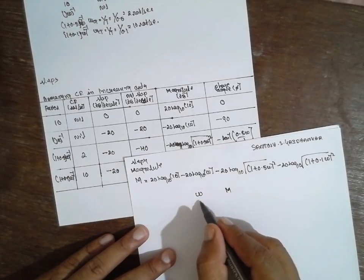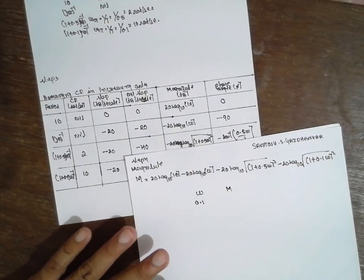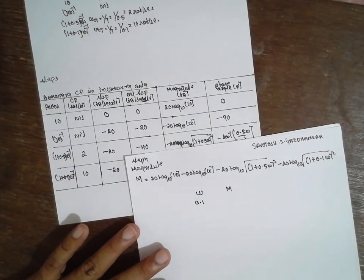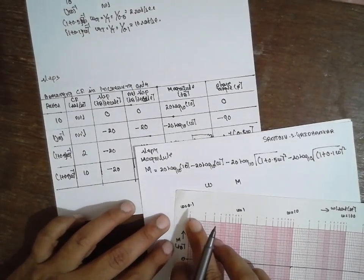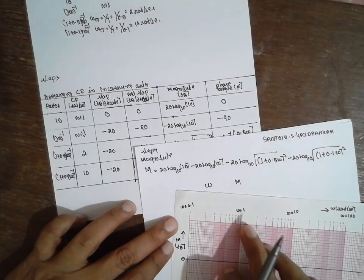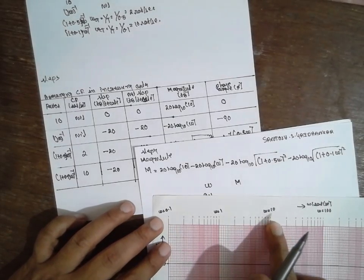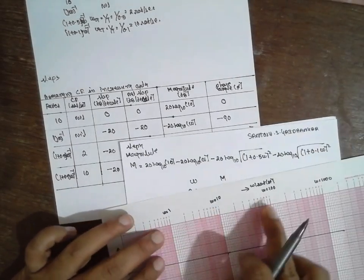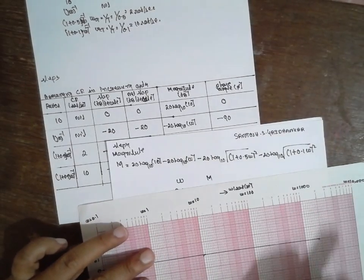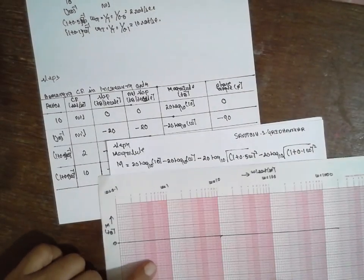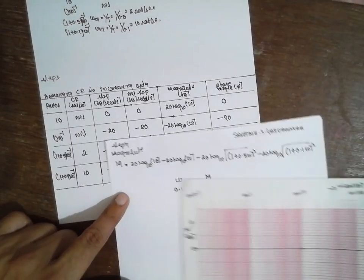For ω = 0.1, why start at 0.1? Because the first value considered is 0.1, then 1, 2, 3, 4, 5 up to 10, then 100, 1000. Therefore substitute ω = 0.1 into the magnitude formula.